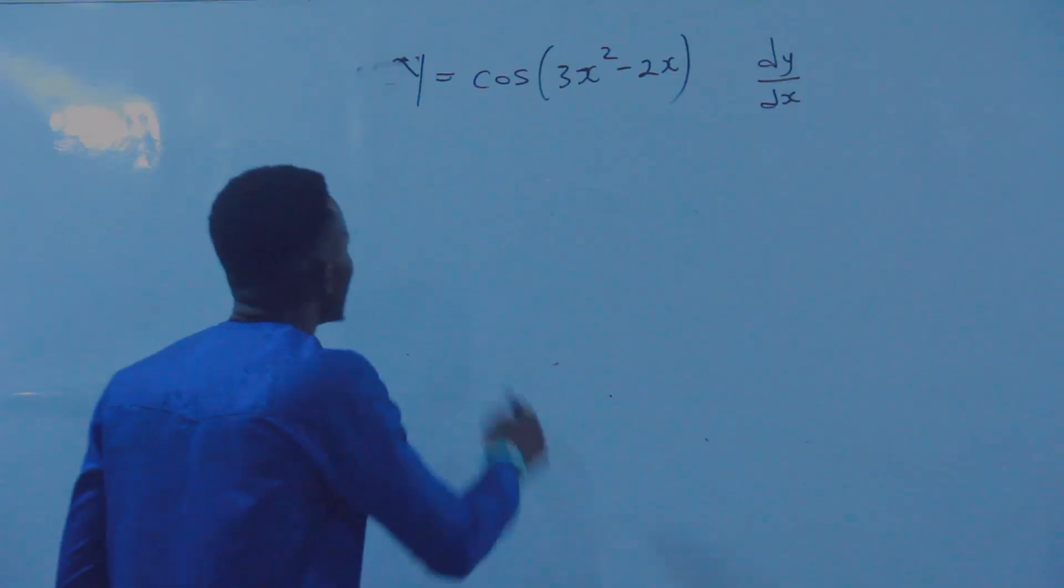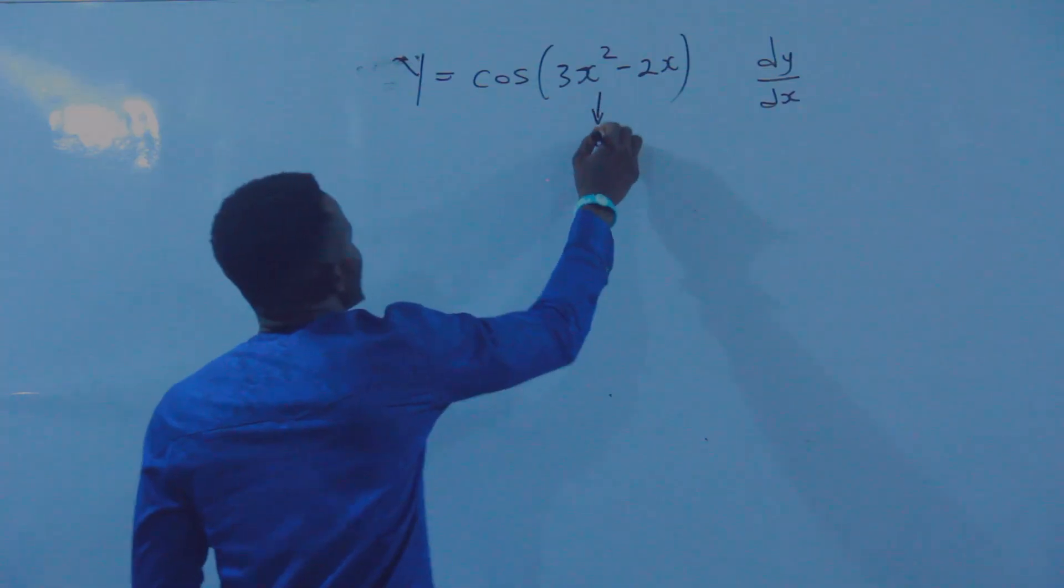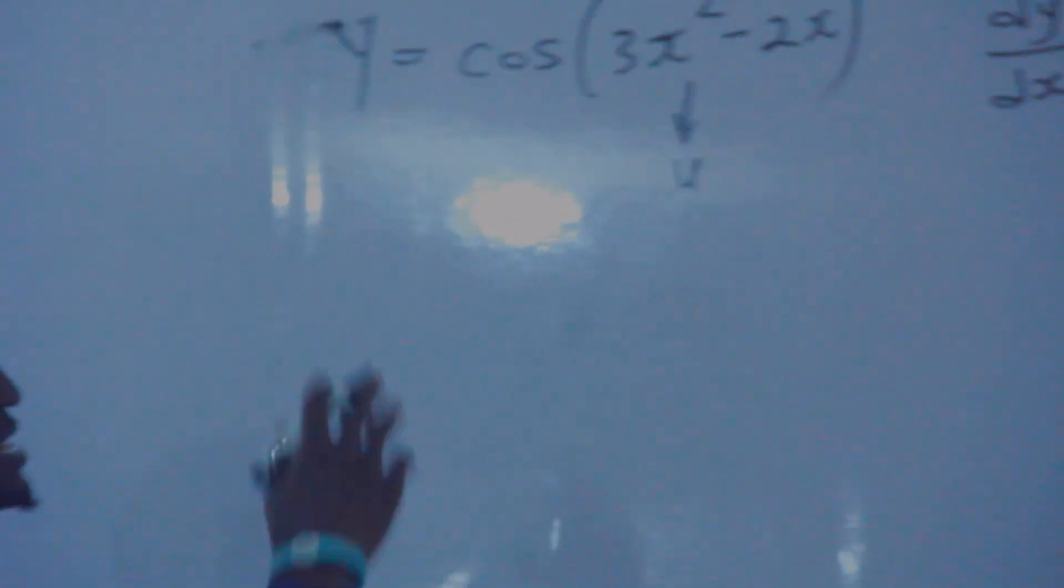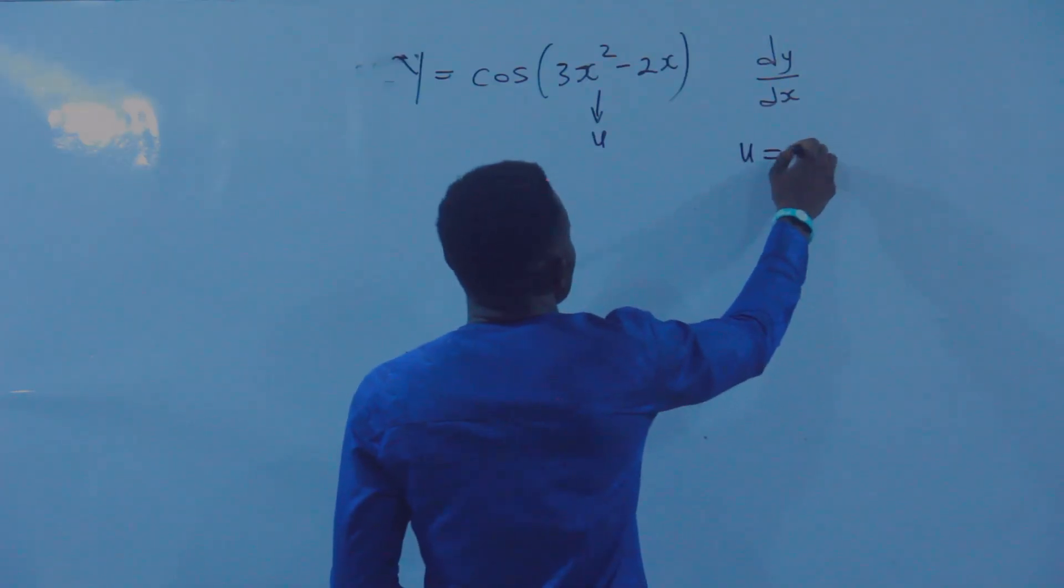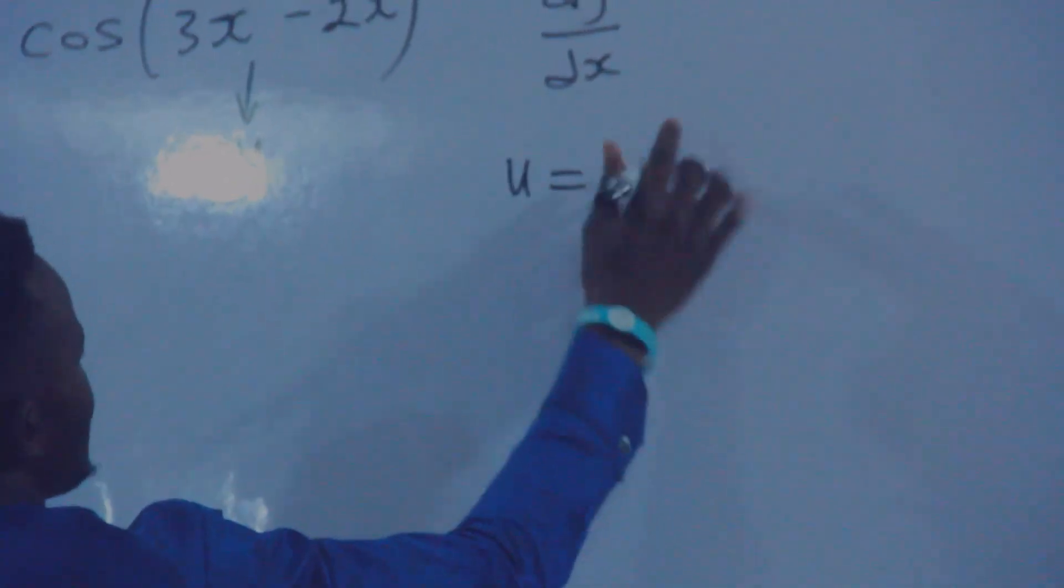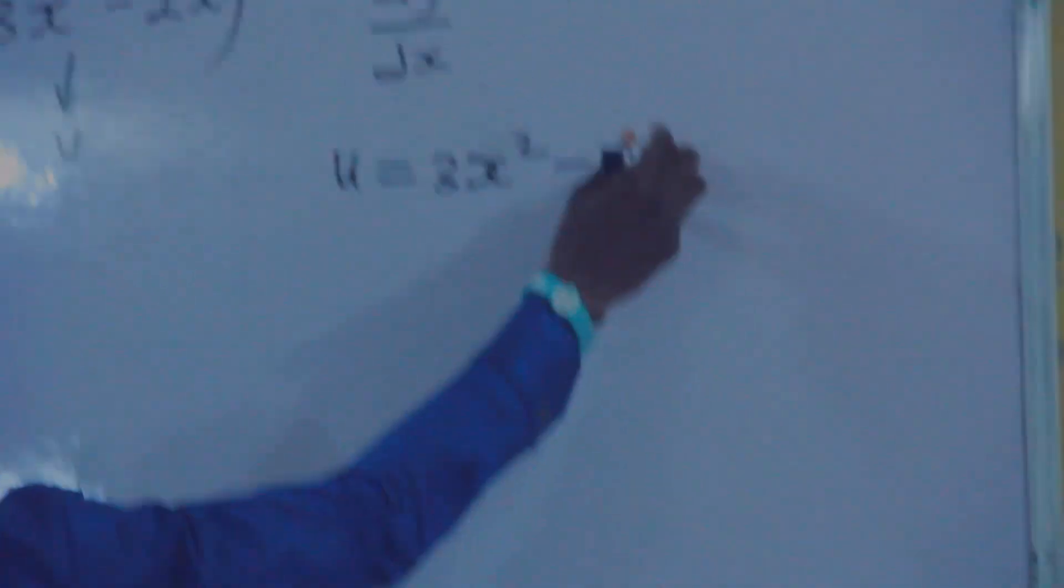Now, if you are using AND to solve this, I will say, let this be equals to U. If I assume or substitute this to be U, don't forget that U equals 3X squared minus 2X.